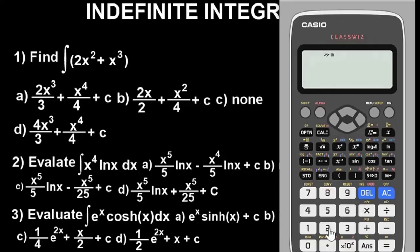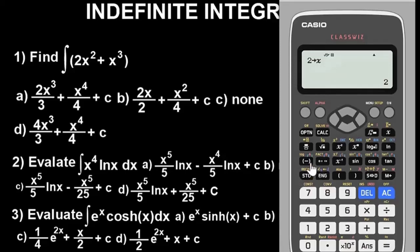To store x = 2: press the number 2 first. Now, unlike the white Casio fs-91ES Plus, on this black one you don't press Shift. Just press Store and then the alphabet X. Once you do that, it will indicate that 2 has been stored as X. If you press Shift and Store on this black one, it will not work.